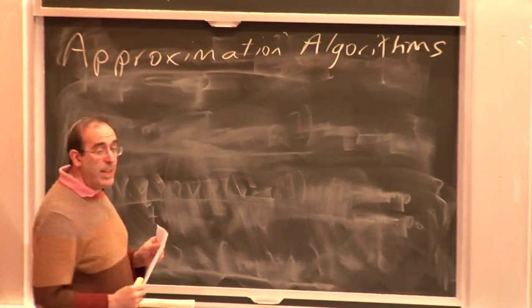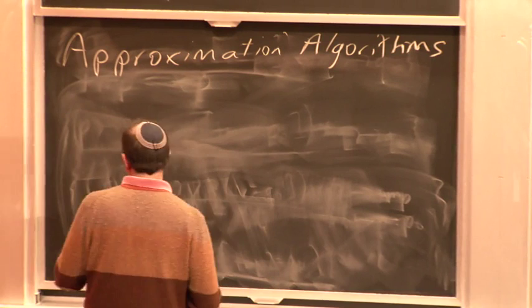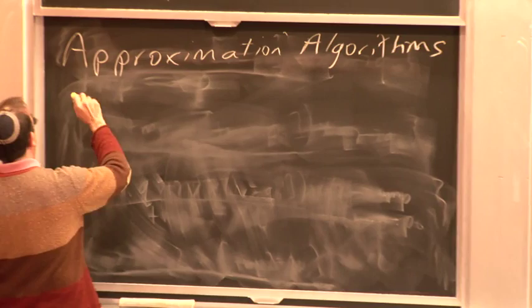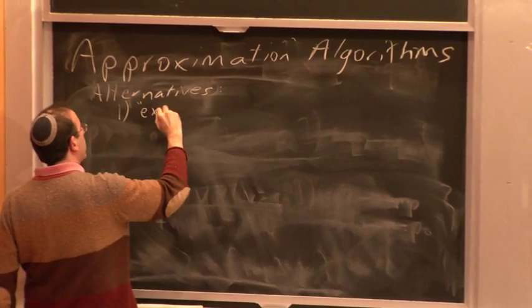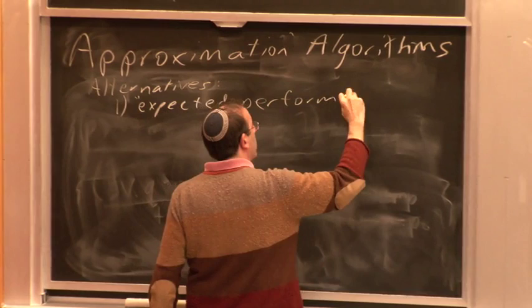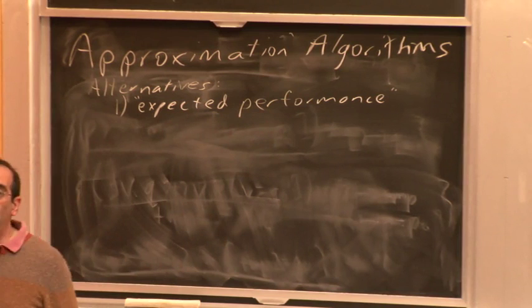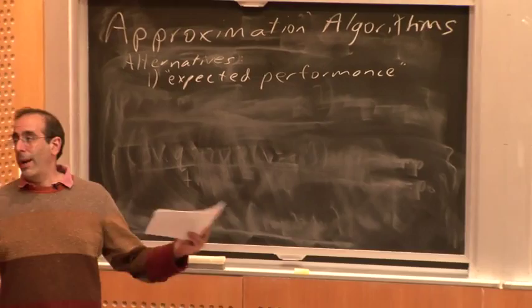So if you're faced with an intractable problem where you don't have any hope of coming up with the correct answer, what sort of approaches might you take? Let me list some alternatives before we dive into approximation algorithms. One is to look at expected performance. There's a lot of work on problems which says that while a problem may be difficult in the worst case, on average it's easy. If you give a random input, a random problem instance, then it's easy to solve.